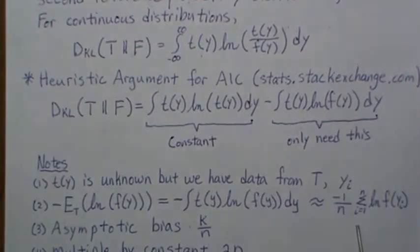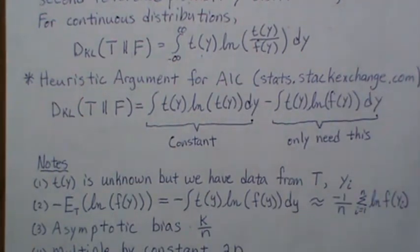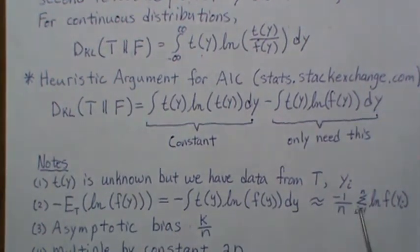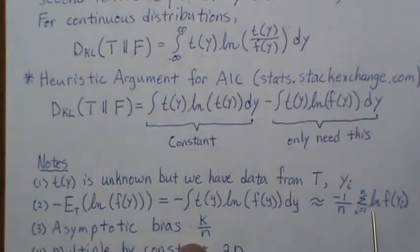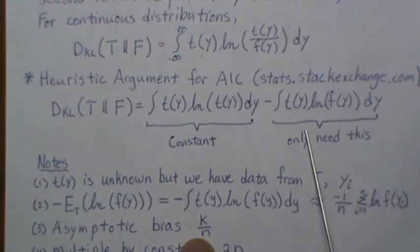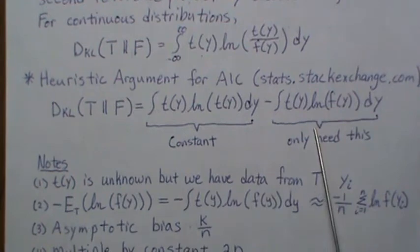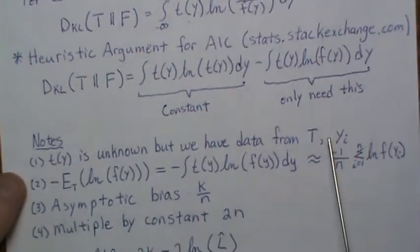The AIC is an asymptotic result, so if we let N go to infinity, there's an asymptotic bias of K over N in this. We're going to use this piece plus this bias as a sample estimate of this piece.